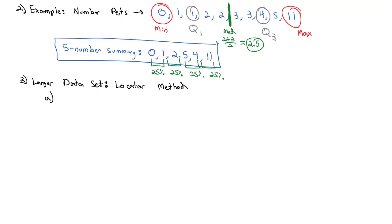The locator method says Q1 is above 25% of the data. That's what we just said. It splits it into quarters. Similarly, the median is above 50% of the data. And Q3 is above 75% of the data.